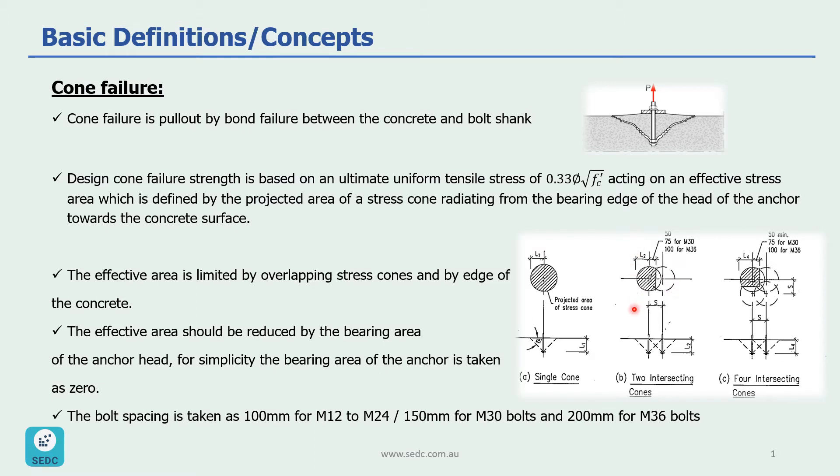This effective area should be reduced by bearing area of the anchor head and for simplicity we assume that the bearing area of the anchor is taken as zero. So this means the cone starts from exactly the centerline of the anchor and extends to the surface with 45 degree angle.